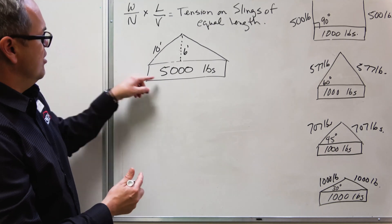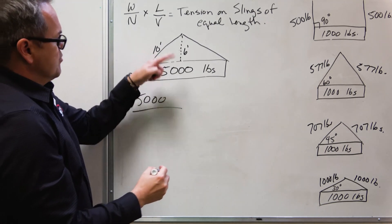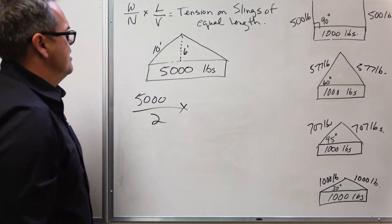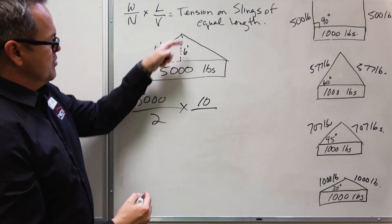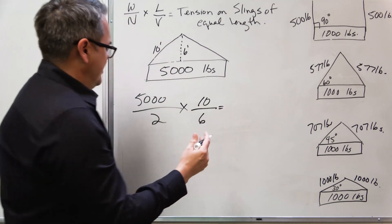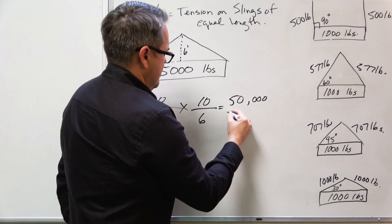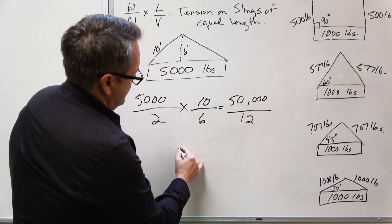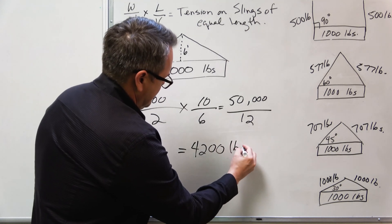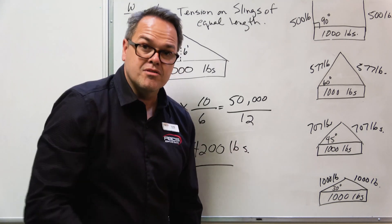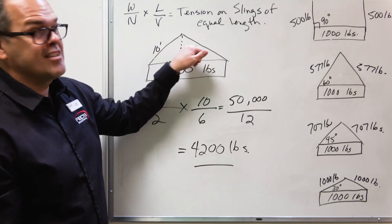Let's use the formula. Weight of the load, 5,000 pounds. Number of slings, we got 2, times the length of the slings, which is 10, divided by the vertical, which is 6. I like to do things in steps, so that's going to be 50,000 divided by 12. And that's going to work out to approximately 4,200 pounds. What we're saying is it's going to be about 4,200 pounds of force on each of these slings.